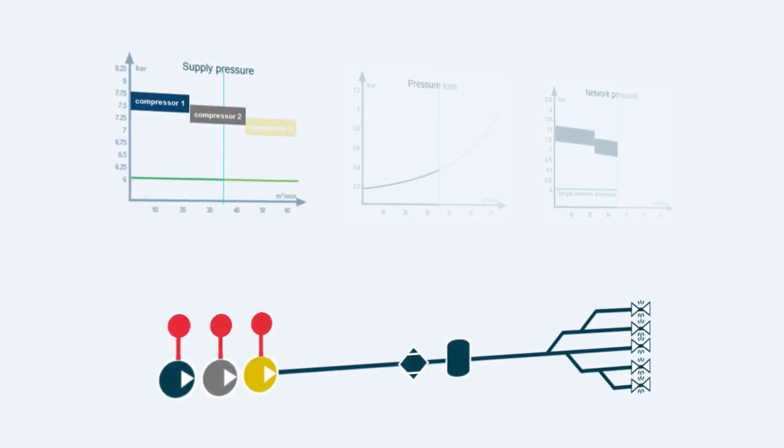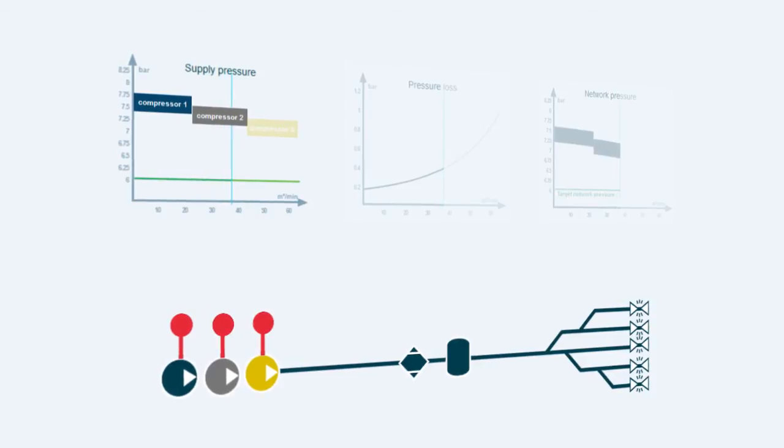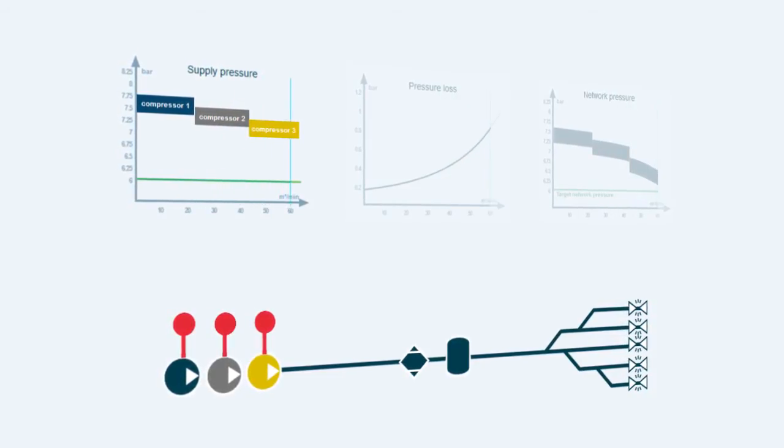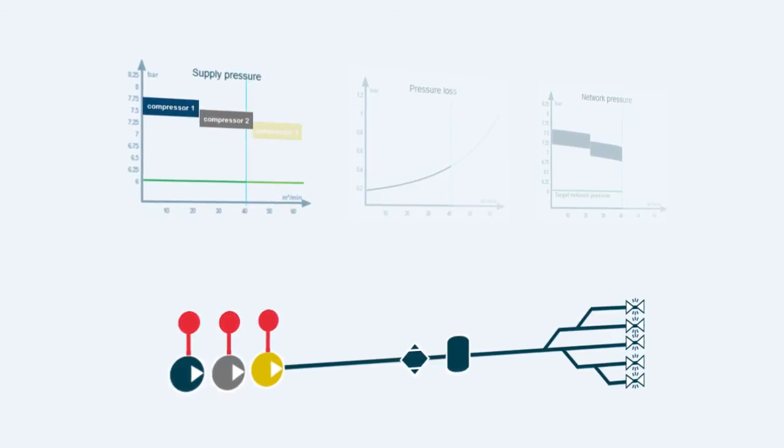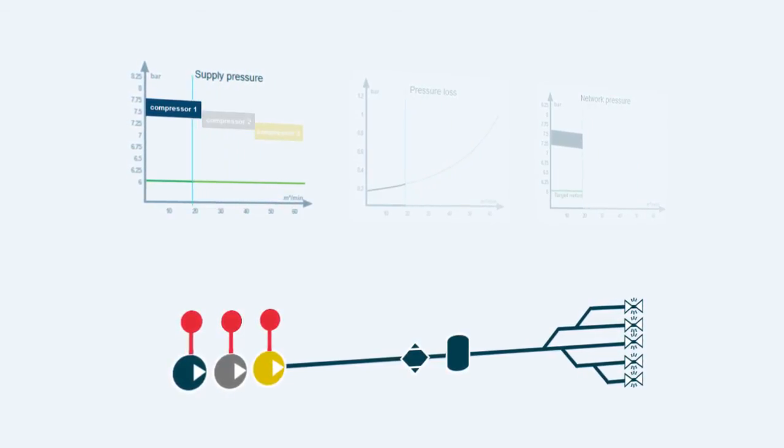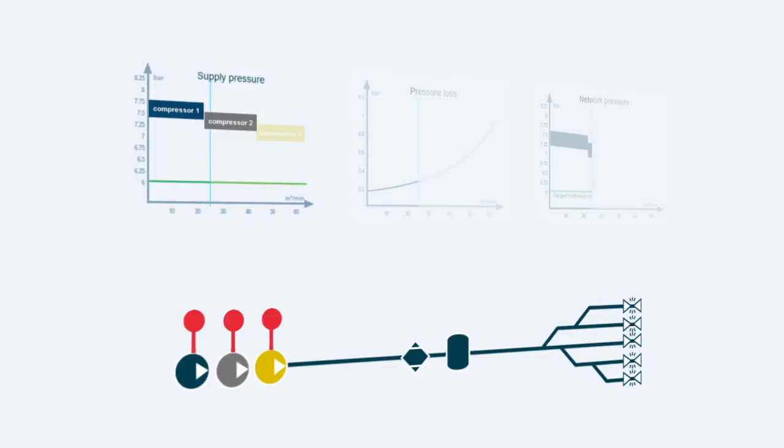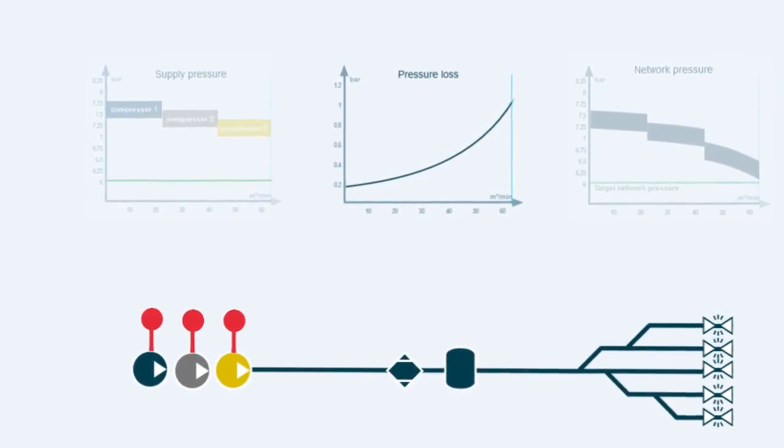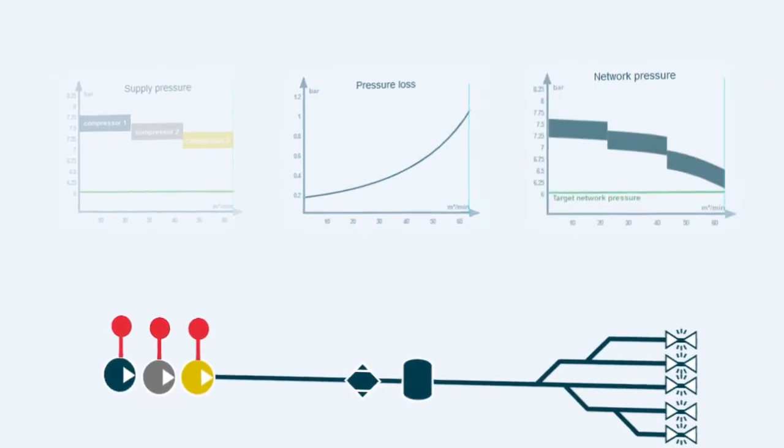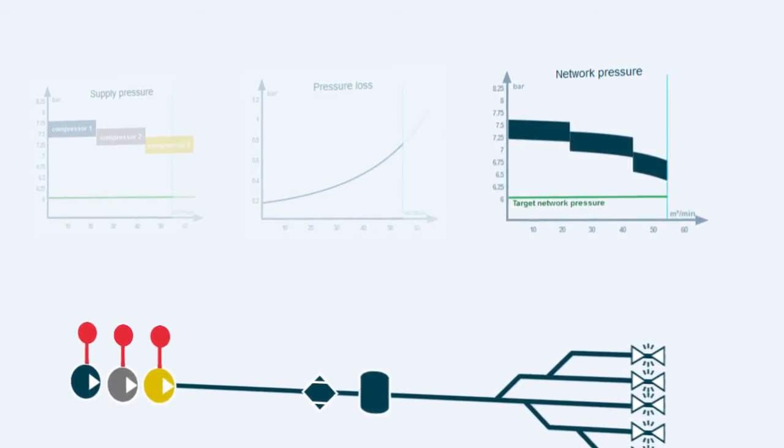At maximum consumption, the output of all three compressors is needed. The result is that the pressure level in the compressor room is high at low consumption, and drops as air consumption increases. Since the air treatment and the pipe work cause further pressure losses, the pressure fluctuation at the consumption point is accentuated.